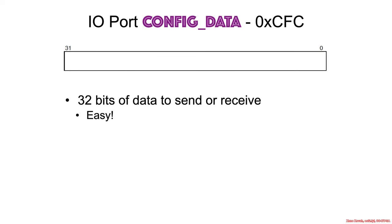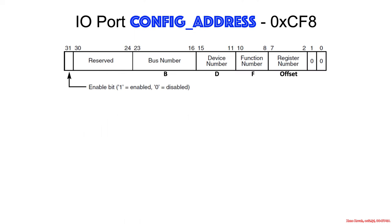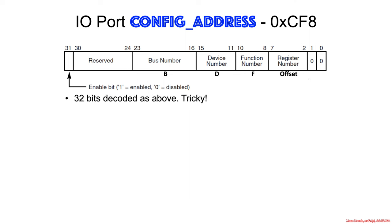When it comes to config data or CFC, interpretation of that port is super easy — it's basically just 32 bits of data to send or receive. On the other hand, config address CF8 has a particular parsing that you have to understand. This is a bit more tricky, so let's look at from left to right what these bits do, starting with bit 31.